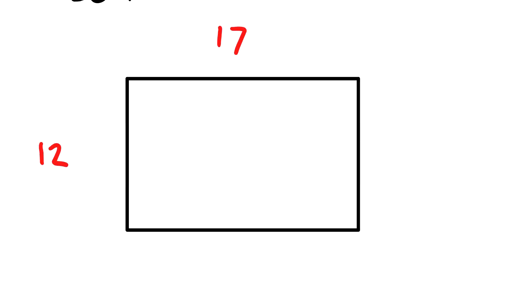What I could do here is break my rectangle up into its parts. So what I could do is go 10 and 2. As you see, there's a 10 and 2, so this top rectangle is going to be 10 times 17 which is 170. This bottom rectangle is going to be 2 times 17 which is 34.